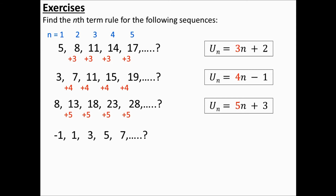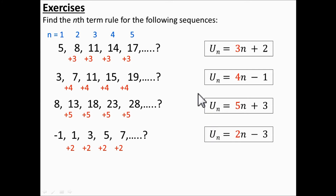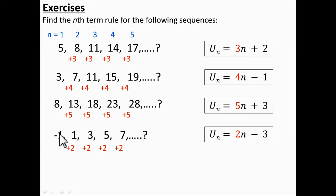For the fourth sequence, even though we start with a negative number we use the same principle — work out the term-to-term difference. We compare two n to the original sequence and notice we just need to subtract three to get our sequence. It's best to check with one term: when n is one, two n is two, and subtracting three gives minus one, which is the first term. So the nth term rule is two n minus three.